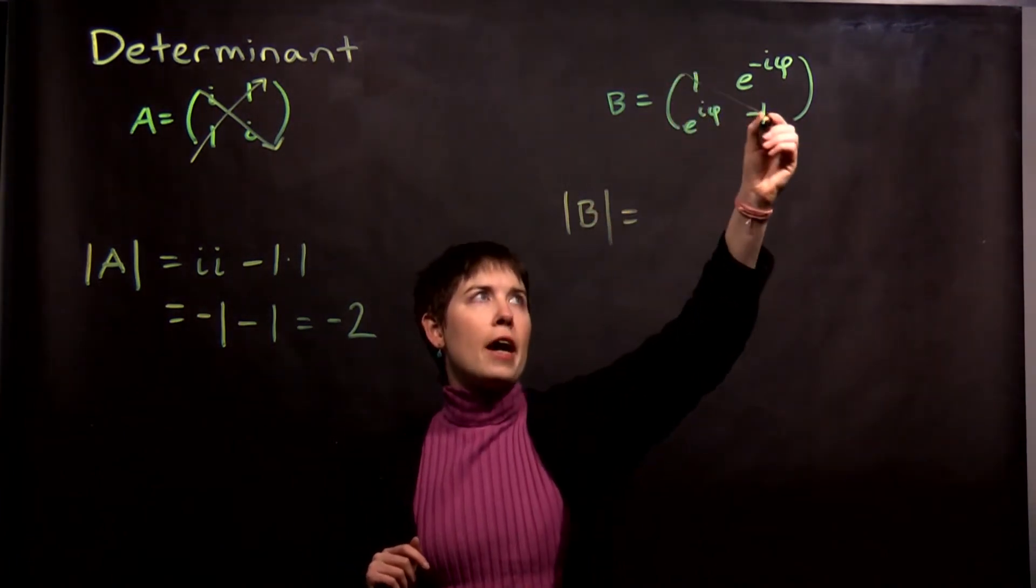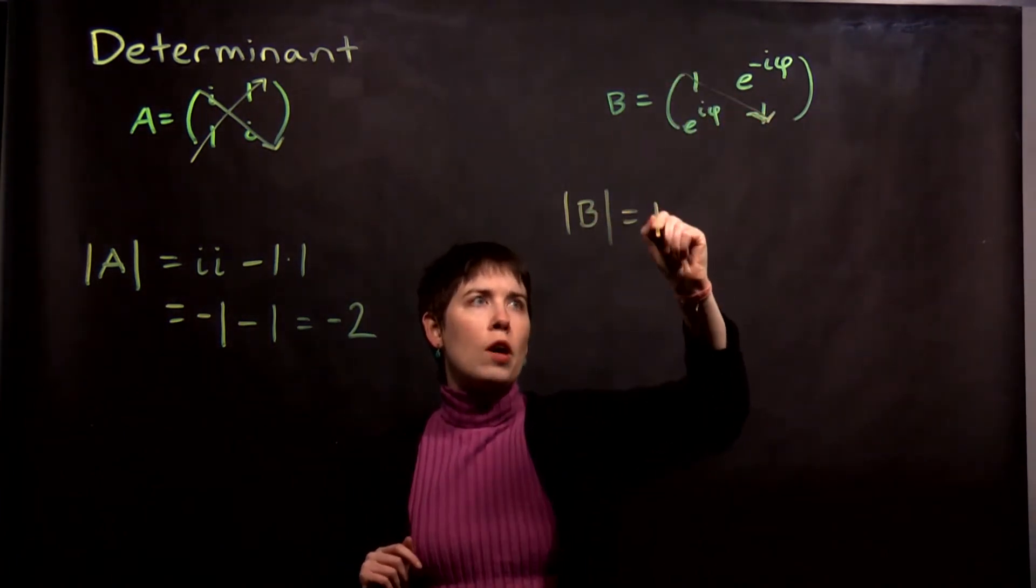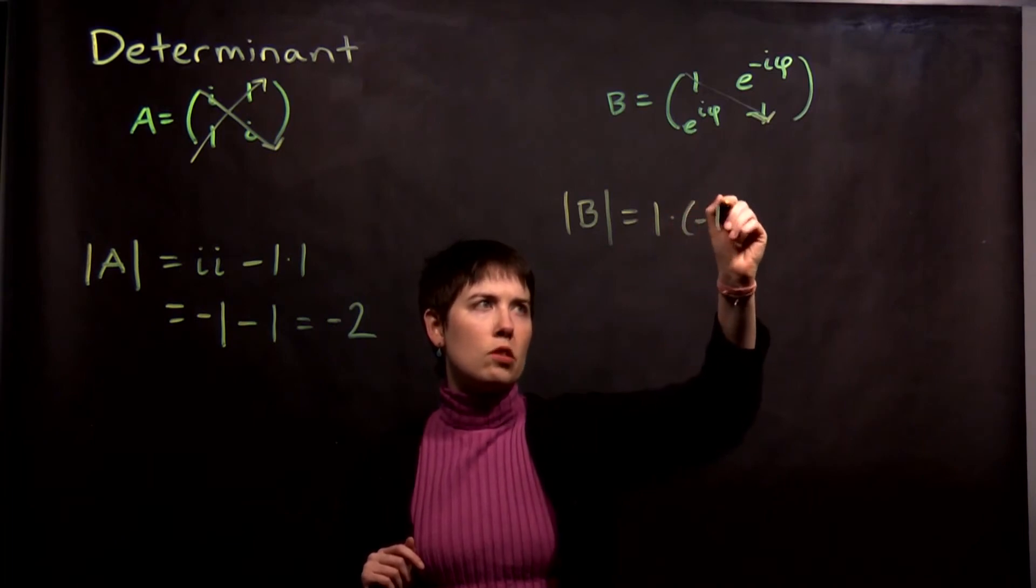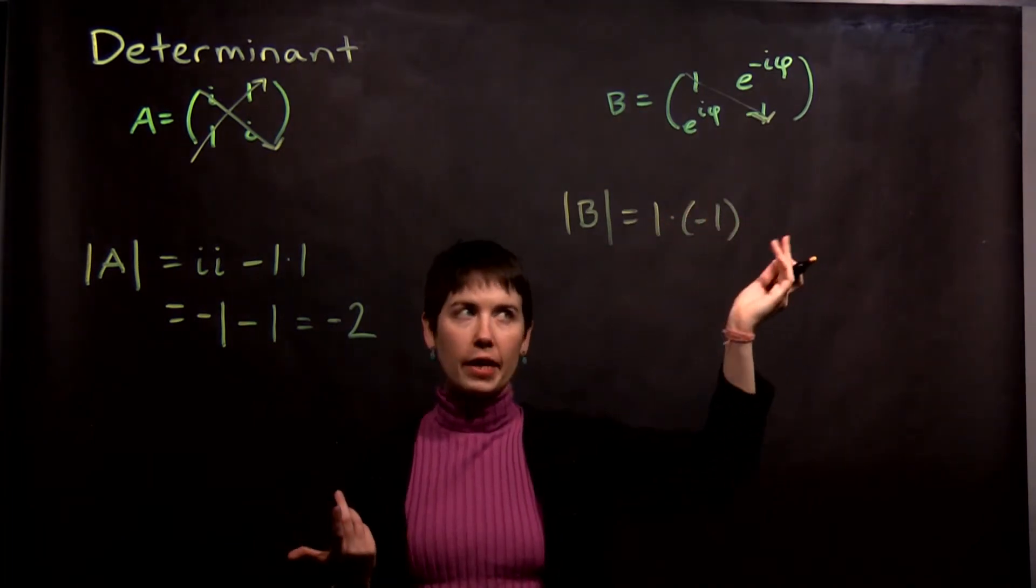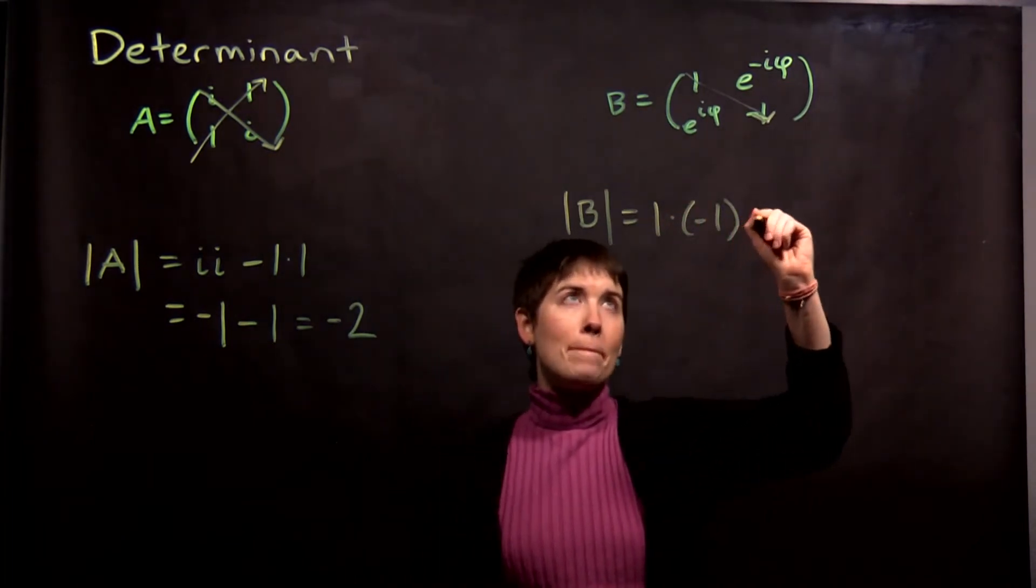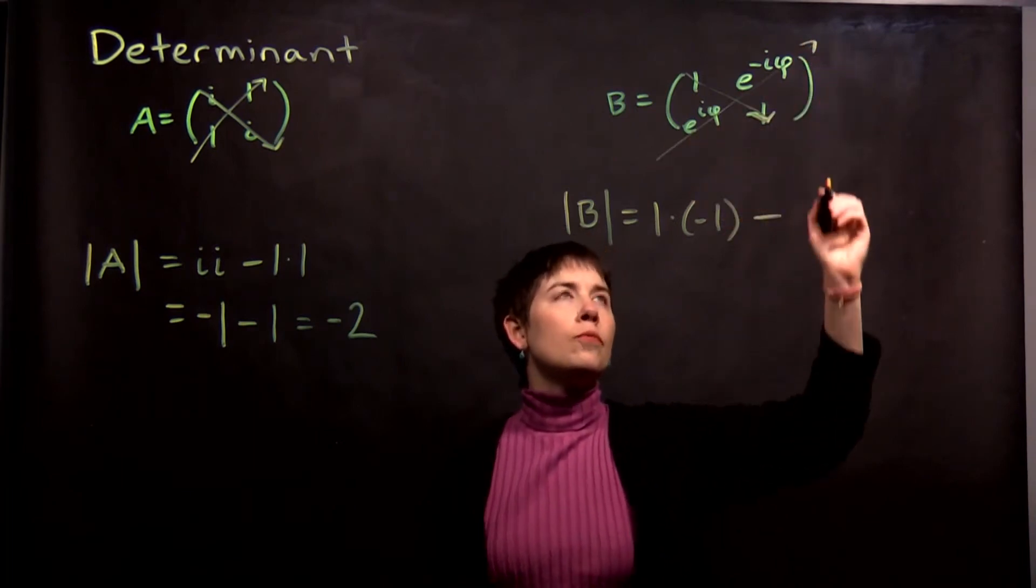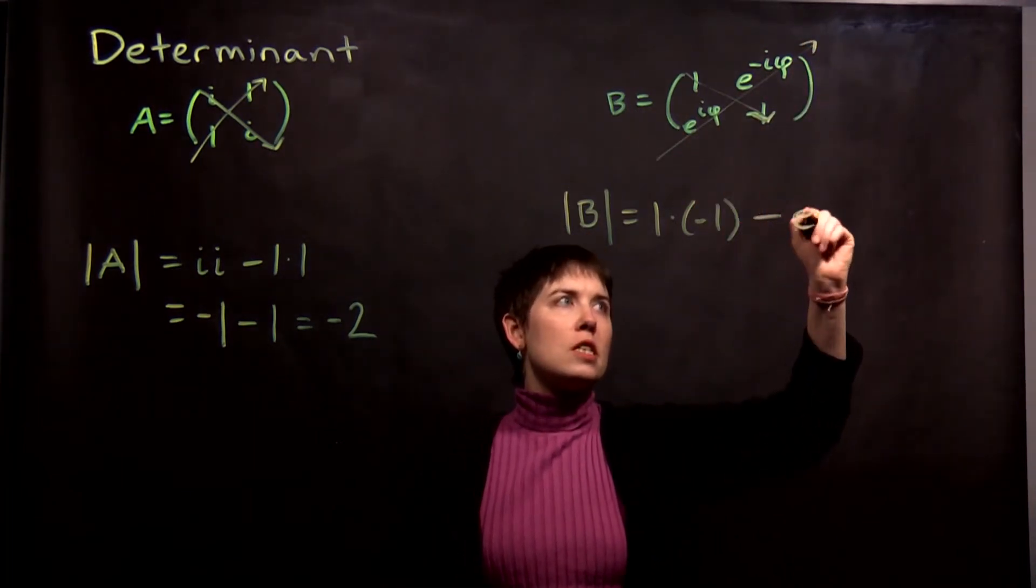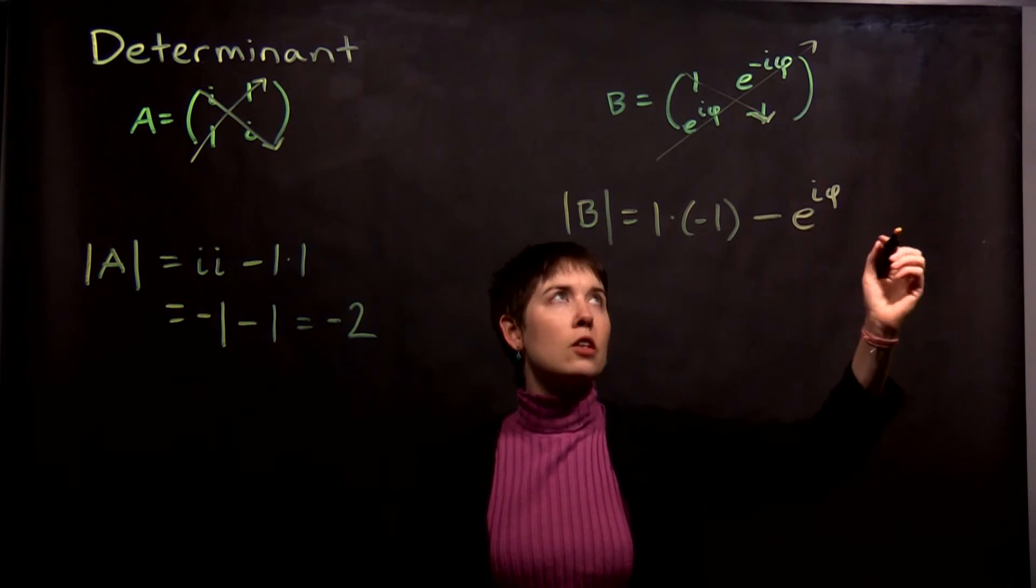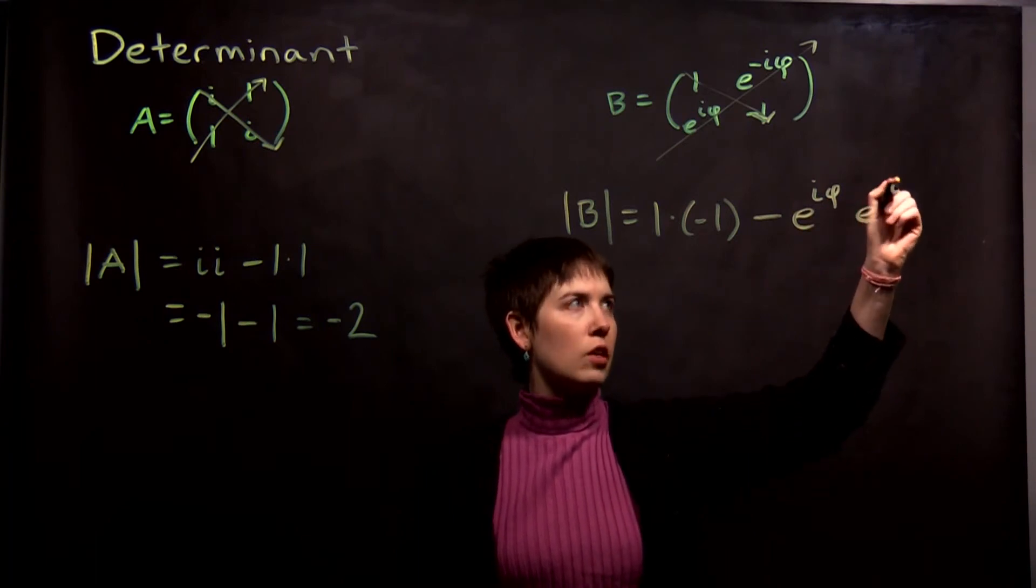So first we have that down diagonal, and that was 1 times, and I'll put it in parentheses just to make it clear, 1 times negative 1. Then minus that up diagonal. My first term here is e to the i phi. My second term was e to the negative i phi.